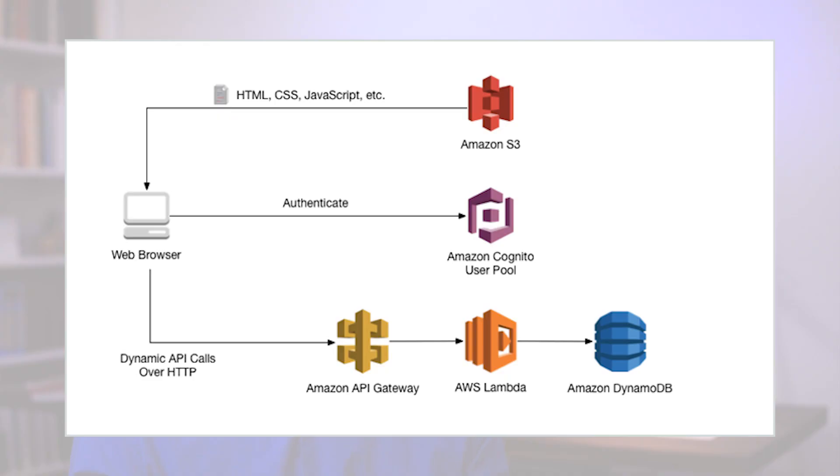AWS Lambda also integrates with other AWS services like Amazon API Gateway, Amazon DynamoDB, and Amazon S3. You can check out some of our other articles and videos about how AWS Lambda works with these other services. Check out those links below.